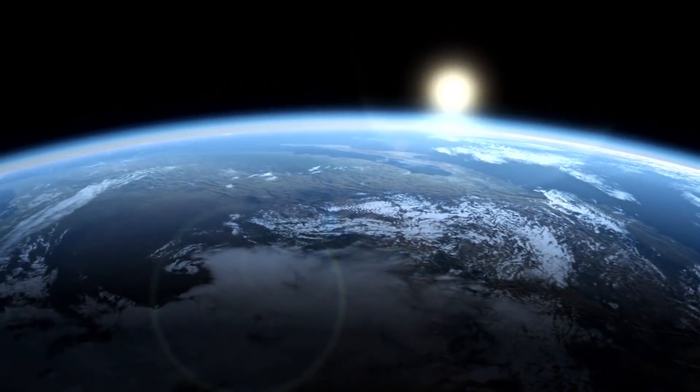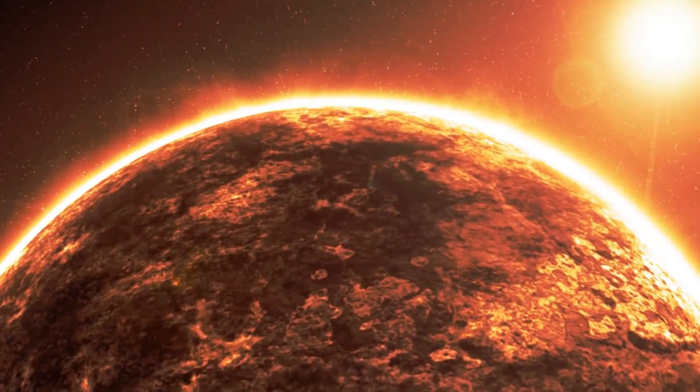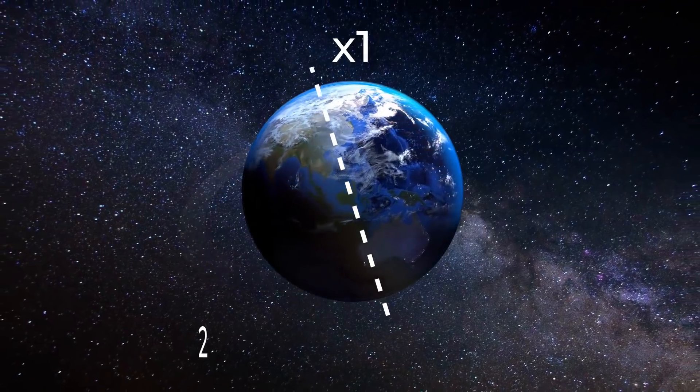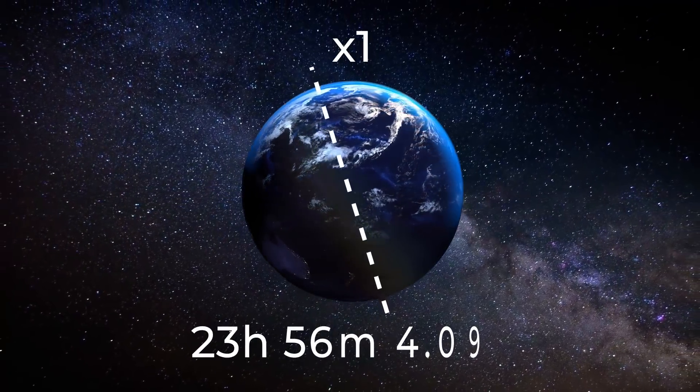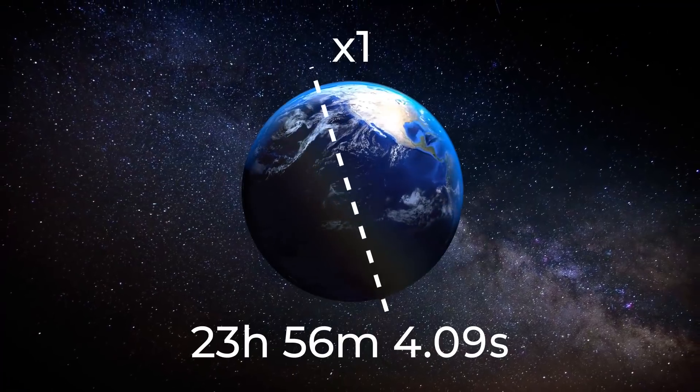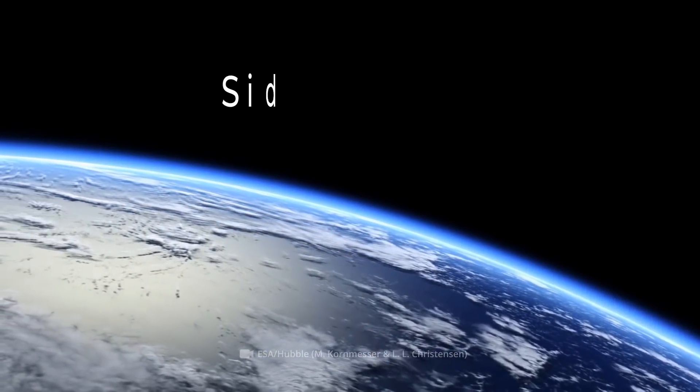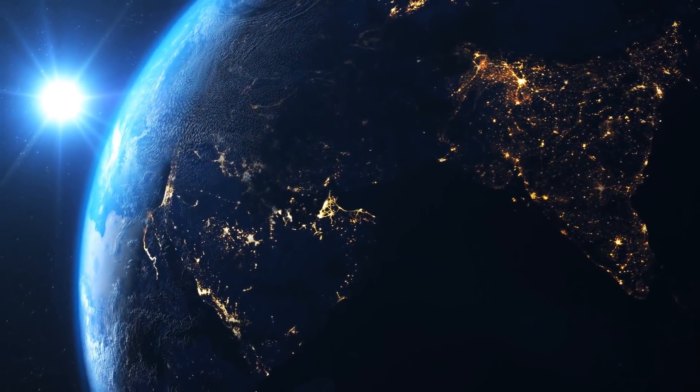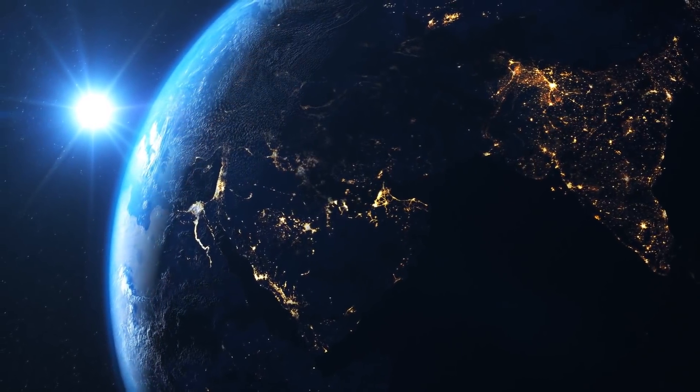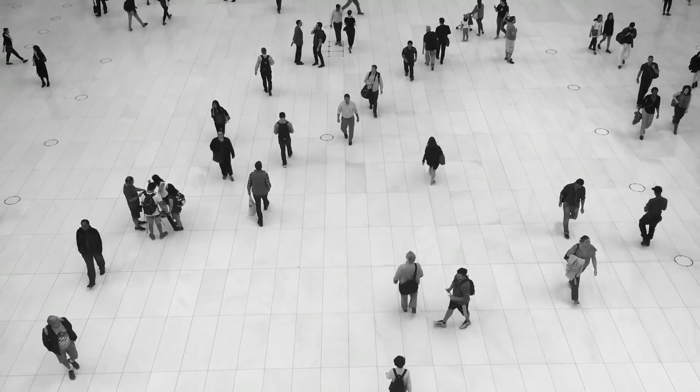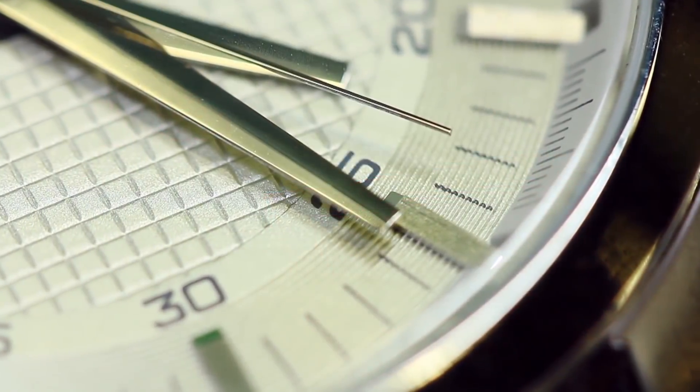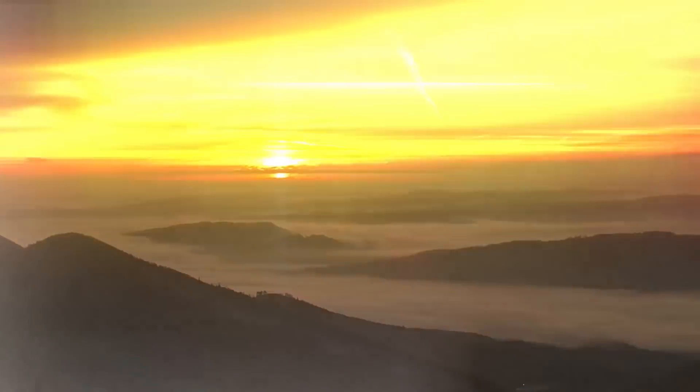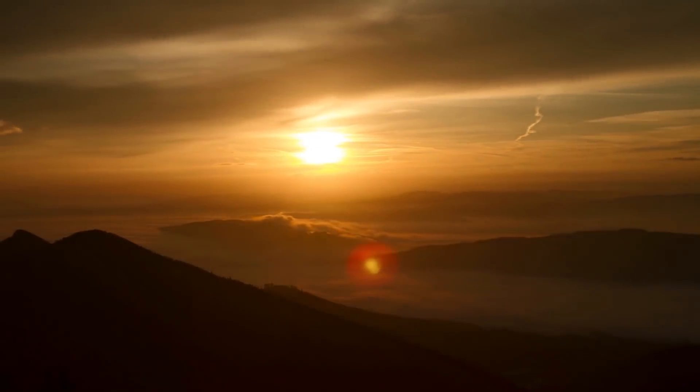Our planet rotates on its axis, making one complete revolution in 23 hours, 56 minutes, and 4.09 seconds. This period of time is called a sidereal day. It's the duration that scientists have come up with observing the speed of rotation of our planet. Ordinary people are used to calculating time by calendar days, consisting of exactly 24 hours, or 86,400 seconds. But has a day on Earth always been this exact length?